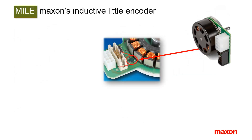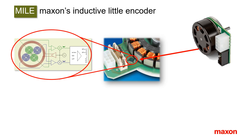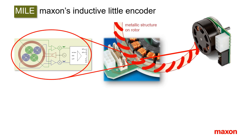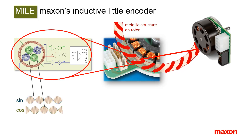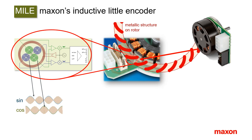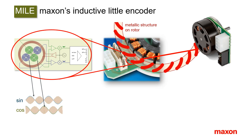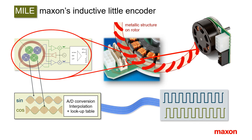The MILE is the perfect encoder to be integrated into flat motors. It contains all the electronics including a line driver in one tiny chip, and is based on an inductive physical principle. A high-frequency signal is transformed onto two pairs of pickup coils, modulated by a metallic structure on the rotor. Each section of the metallic target induces sine and cosine modulated signals in the pickup coils. An arctangent operation gives the rotor angle, and further signal treatment includes interpolation and production of rectangular encoder pulses. An adjustment process allows correcting the signal state width by means of a lookup table.